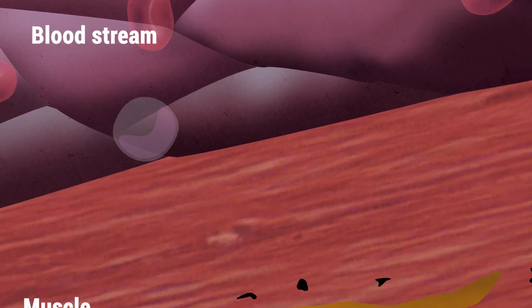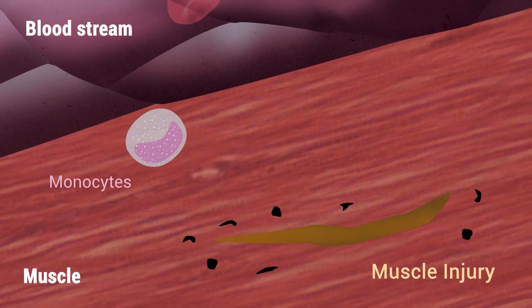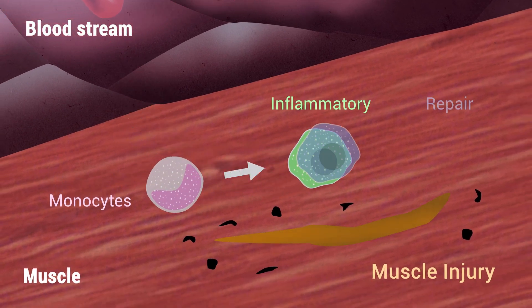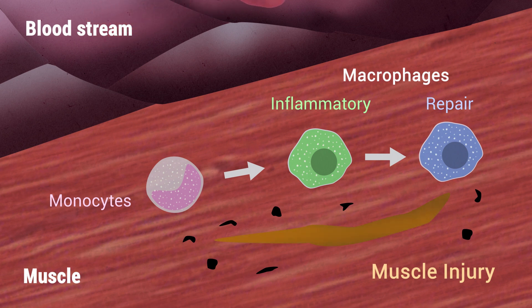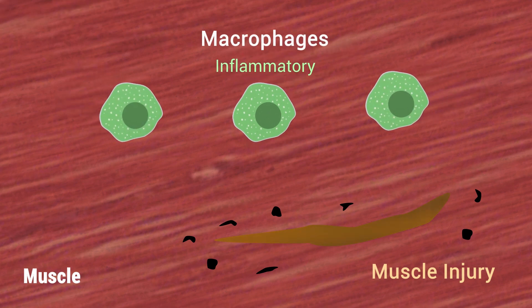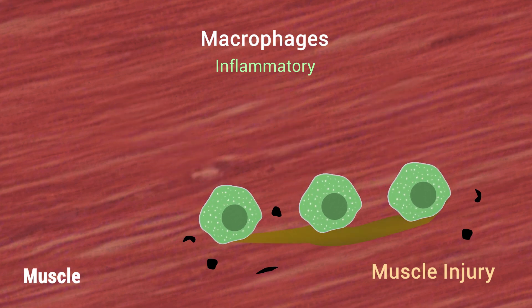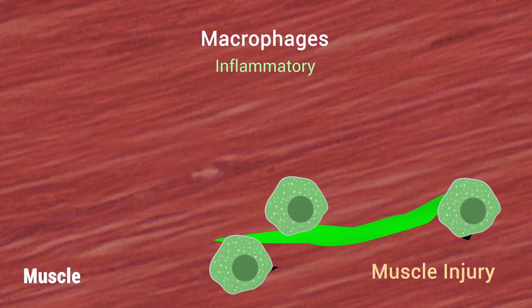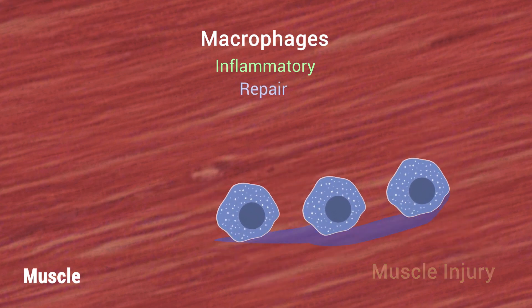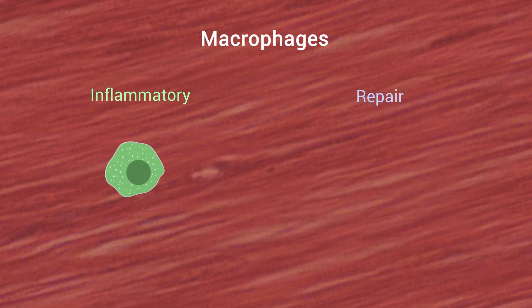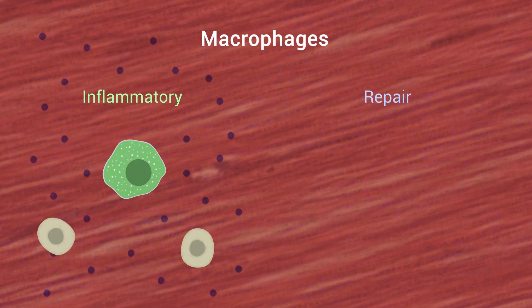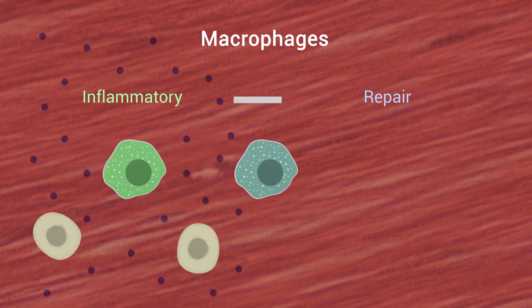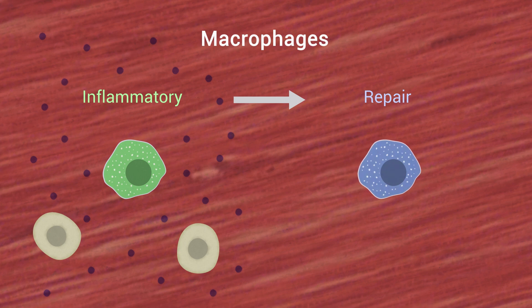The infiltration and subsequent subtype specification of monocytes to inflammatory and repair macrophages is indispensable for tissue repair upon acute sterile injury. Monocyte-derived macrophages are consistently detectable in injured muscles and are involved in all phases of muscle regeneration, such as confining the damage, clearing the necrotic debris via phagocytosis, and contributing to repair. It is likely that the microenvironment and intercellular interactions are driving the phenotype switch from inflammatory to repair macrophages.